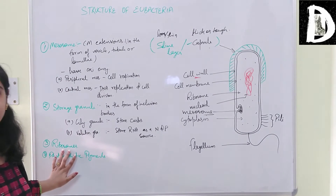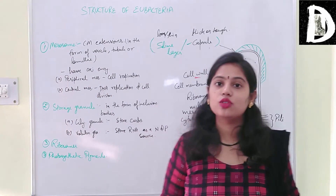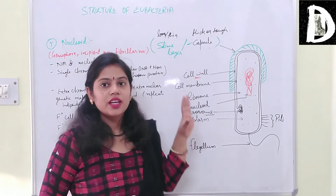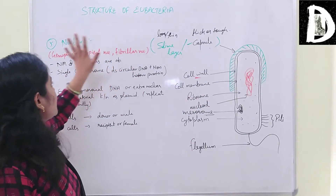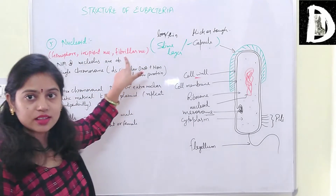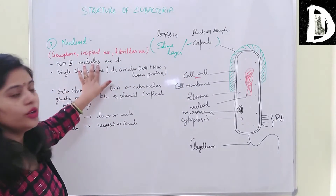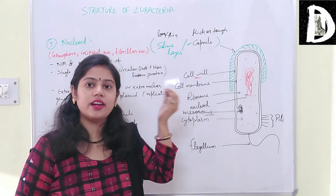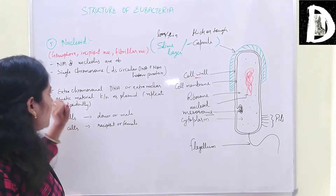Ribosomes are also present in the bacterial cell, and some eubacteria have photosynthetic pigments which allow them to photosynthesize in the presence of sunlight. The next important structure in the bacterial cell is the nucleoid, also known as the genophore, incipient nucleus, or fibrillar nucleus.